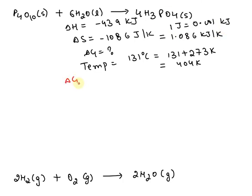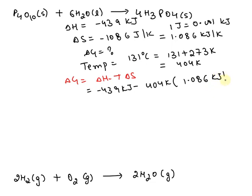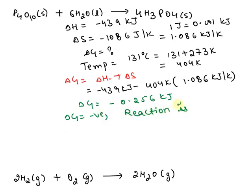The formula used is delta G equals delta H minus T delta S. Substituting the values: delta H is minus 439 kilojoule, minus 404 kelvin into 1.086 kilojoule per kelvin. When we solve this, the delta G value comes to be minus 0.256 kilojoule. Since delta G is negative, this reaction is spontaneous.